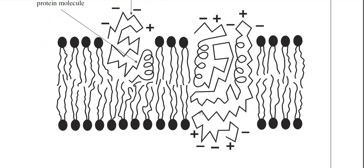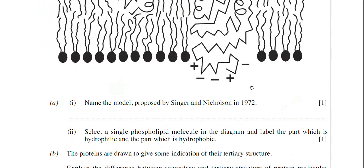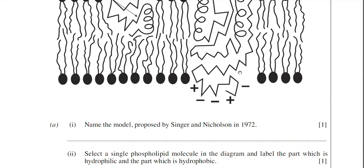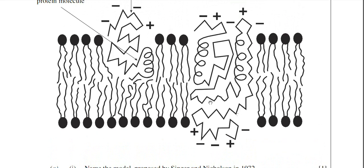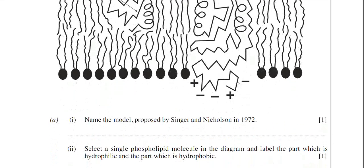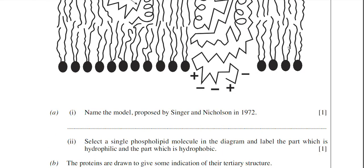Question A1: Name the model proposed by Singer and Nicholson in 1972. Those two scientists gave a name to the model we use to represent the structure of the cell membrane. The name is the fluid mosaic model.